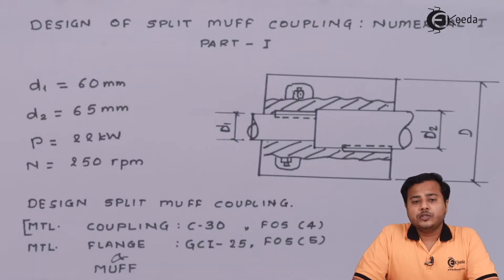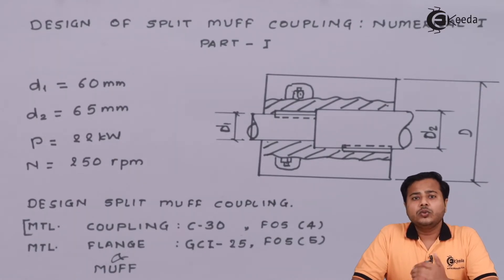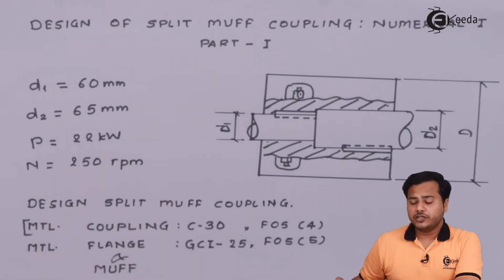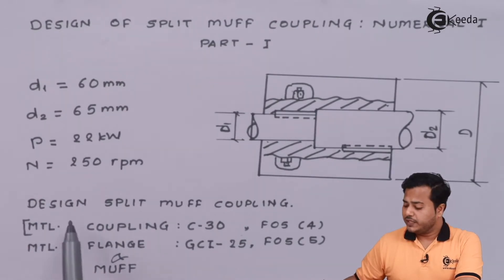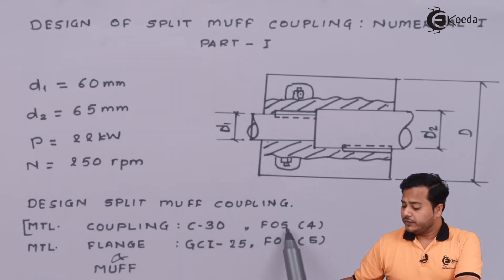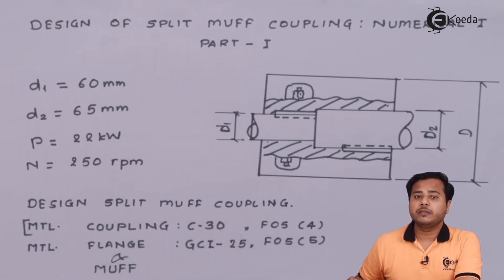Split muff coupling is also known as clamp coupling or compression coupling, because two splits are taken together and they are compressed due to the bolt and nut assembly. The numerical statement is visible on screen — it gives the dimensions for the coupling, the power transmission and RPM, and asks us to design the split muff coupling. Materials with their factor of safety are given, so we need to refer to the PHG data book to find out the material properties.